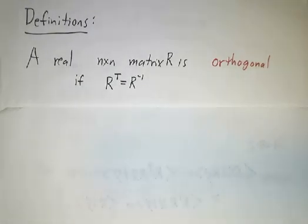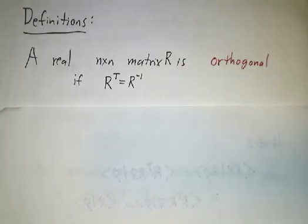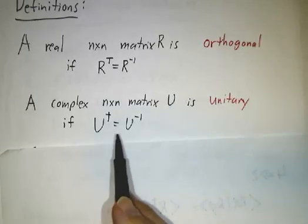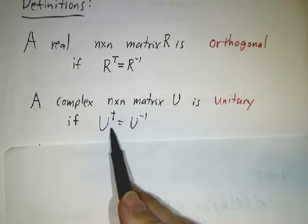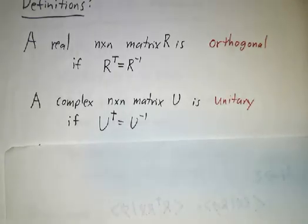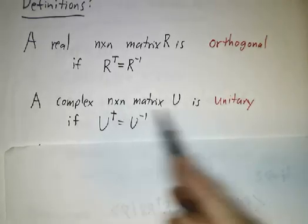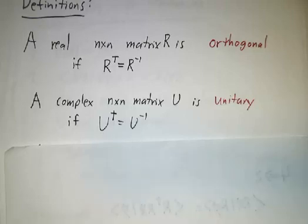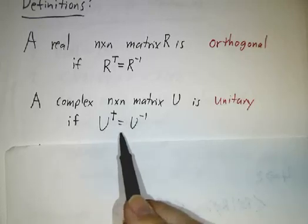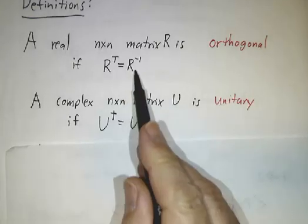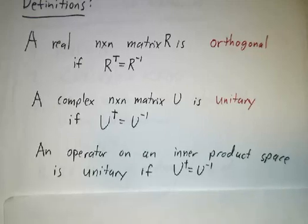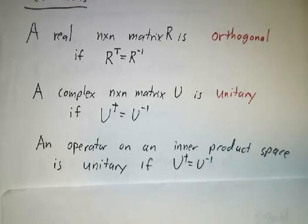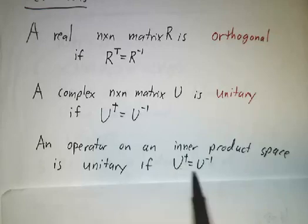You might think that since the columns are orthonormal, we really ought to call it an orthonormal matrix — and maybe we should, but we don't. The analogous thing for complex matrices is called unitary, where we want the transpose conjugate, or the dagger, rather than just the transpose. So a complex matrix is unitary if U dagger is U inverse, and a unitary matrix that happens to be real is the same thing as an orthogonal matrix. If you don't have matrices but just have an operator on an inner product space, we call the operator unitary if its adjoint equals its inverse.